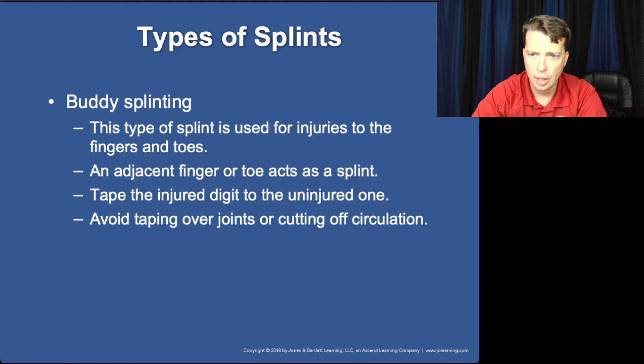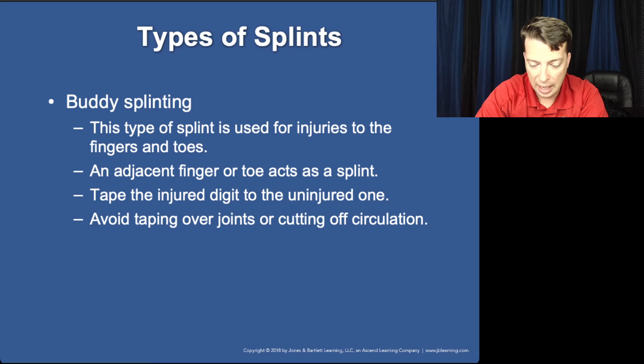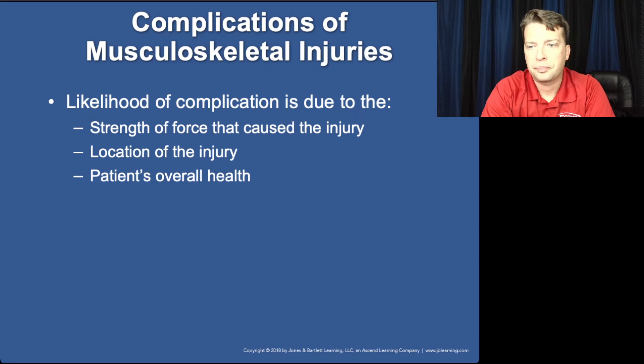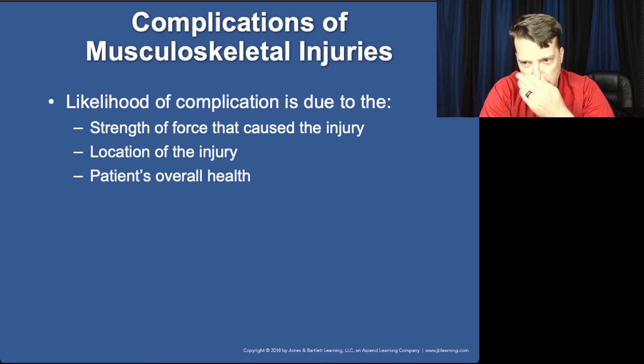Buddy splinting, sometimes referred to as anatomical splinting, is where you splint the injured extremity against another extremity. You can do that with leg to leg, finger to finger, or toe to toe. The leg to leg is a little harder and generally would require you to place a board splint between the two legs.